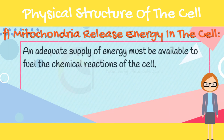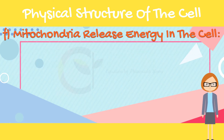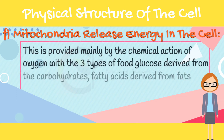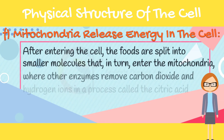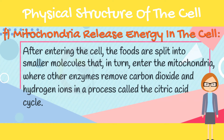Mitochondria release energy in the cell. An adequate supply of energy must be available to fuel the chemical reactions of the cell. This is provided mainly by the chemical action of oxygen with three types of food: glucose derived from carbohydrates, fatty acids derived from fats, and amino acids derived from proteins. After entering the cell, the foods are split into smaller molecules that enter the mitochondria, where enzymes remove carbon dioxide and hydrogen ions in a process called the citric acid cycle.